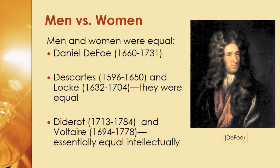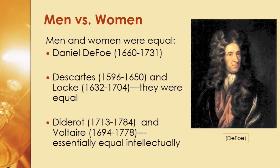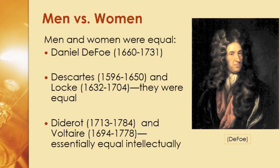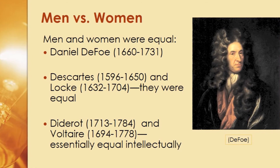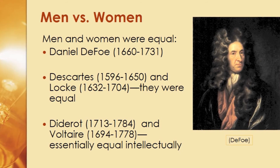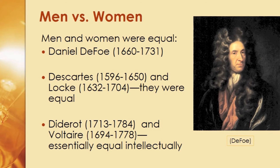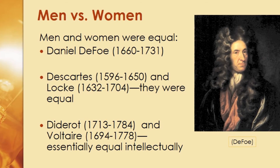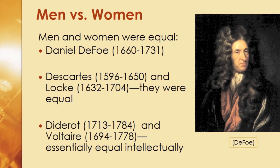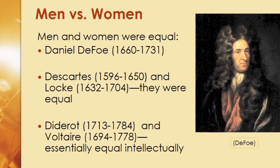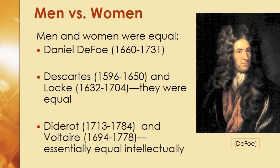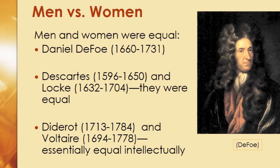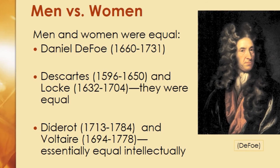The last issue discussed during the Enlightenment was the difference between men and women, a hot topic because women were definitely involved in the Enlightenment but treated much worse than men. Daniel Defoe said that men and women were equal, and that the reason they appeared unequal was lack of education — if women received an education, they would be intellectual equals to men. Descartes and Locke both agreed they were equal. Diderot and Voltaire also said women were essentially equal, but again pointed to education as the barrier.